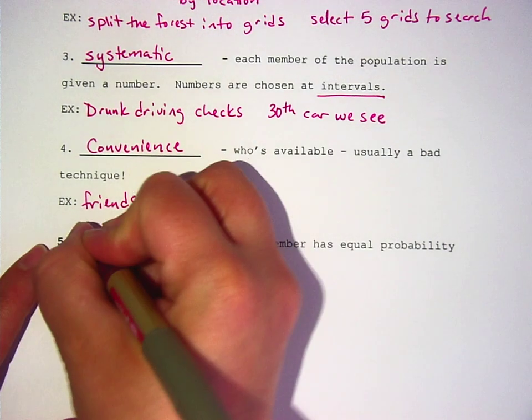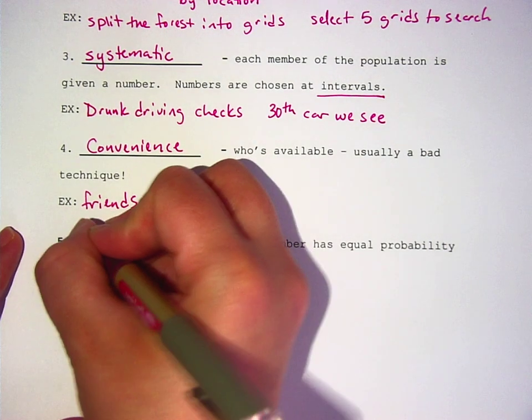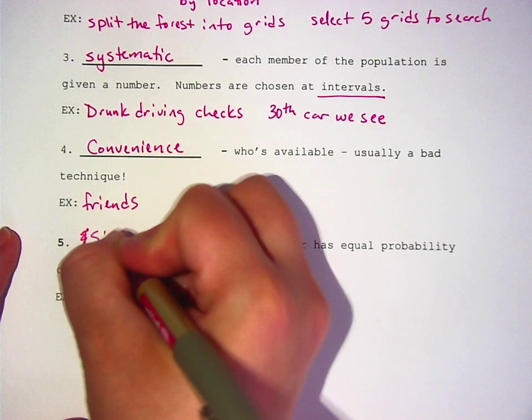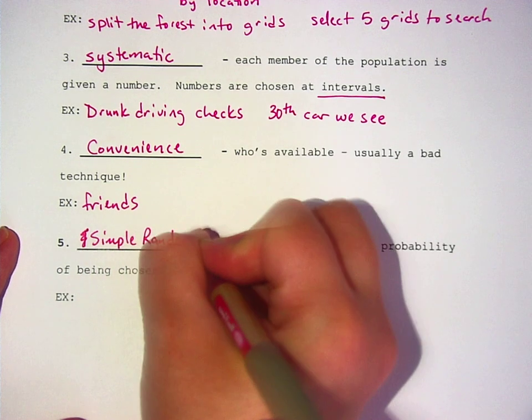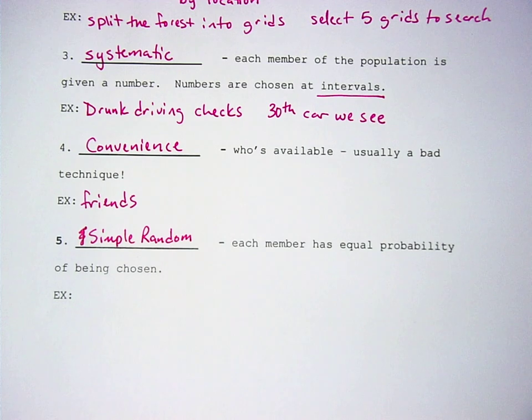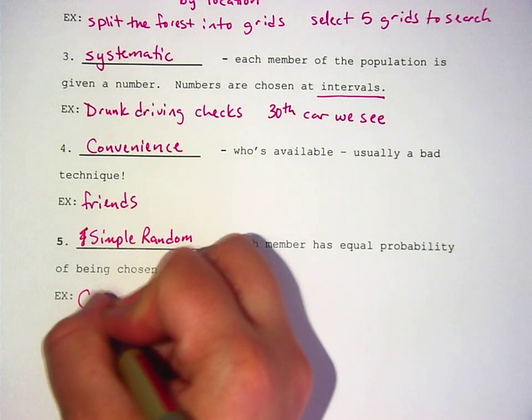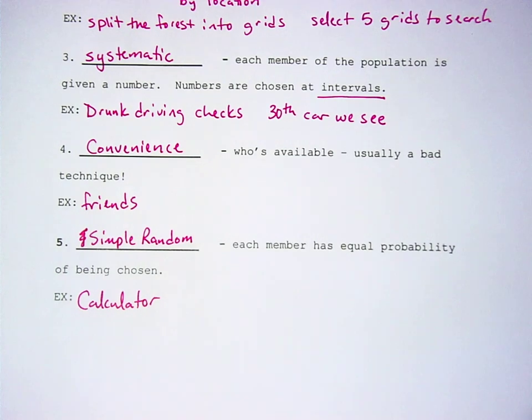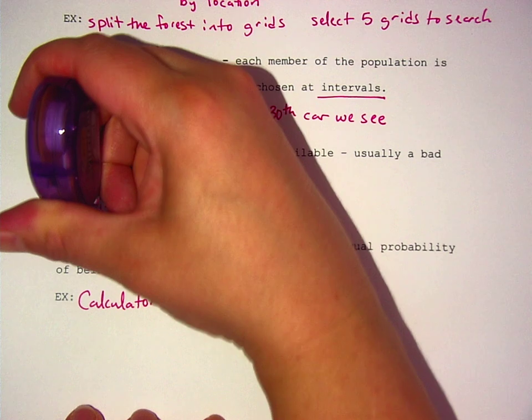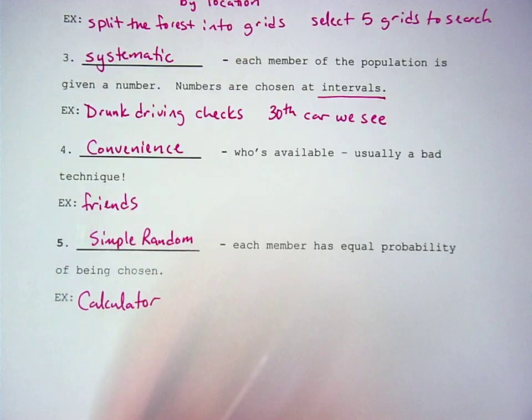And then the last one is called a simple random sample. That's like what I do on my calculator. You assign everybody a number. Everybody gets a number, and then you use some sort of randomization technique, which is not truly random, but pretty close, to pick numbers.